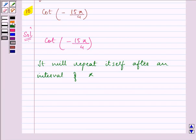So here we can write cot minus 15 pi by 4, and we can add a larger number to it so as to make it positive. That is a multiple of pi only.